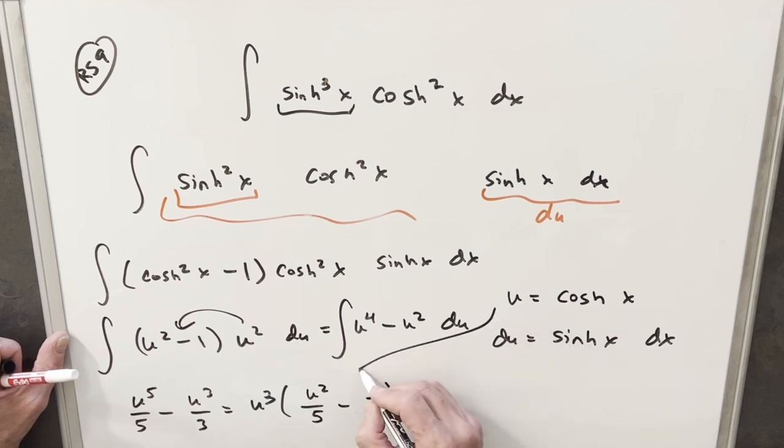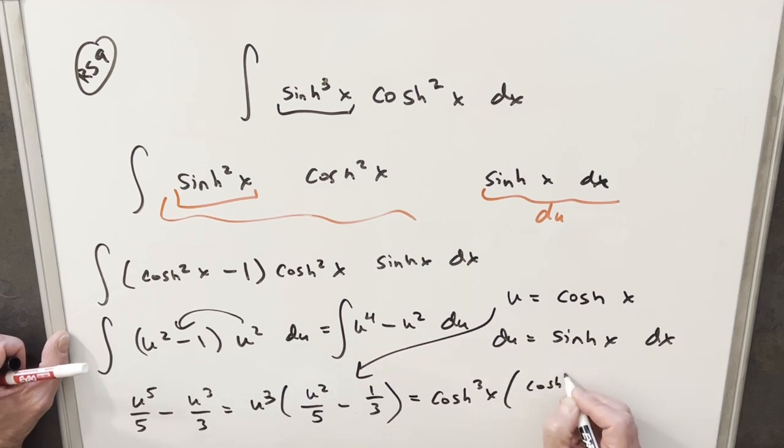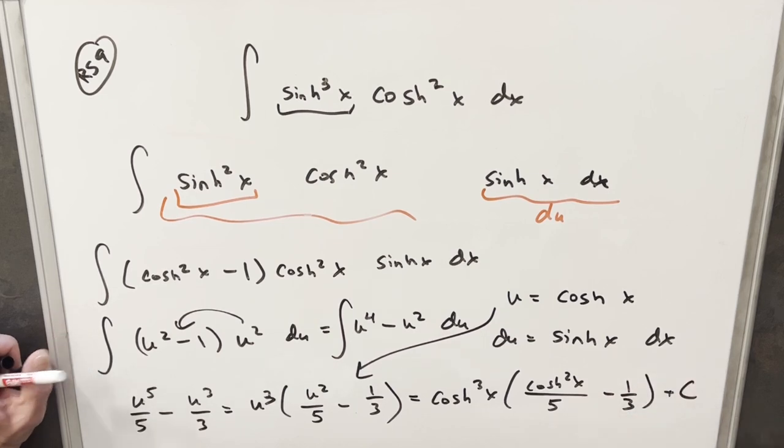And then now I just need to back substitute. So we're going to have, for our final solution, cosh cubed x times cosh squared x over five minus one third plus c.